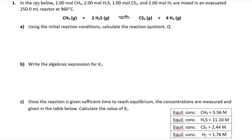We've got a reaction with a bunch of gases: some methane, some dihydrogen sulfide, some carbon disulfide, and some hydrogen gas. Whenever I look at a problem like this, the first thing I want to do is make sure I have an idea of what the equilibrium expression is going to look like. They're all gases, so they will potentially change concentration over time, so it's a good idea to include them all.